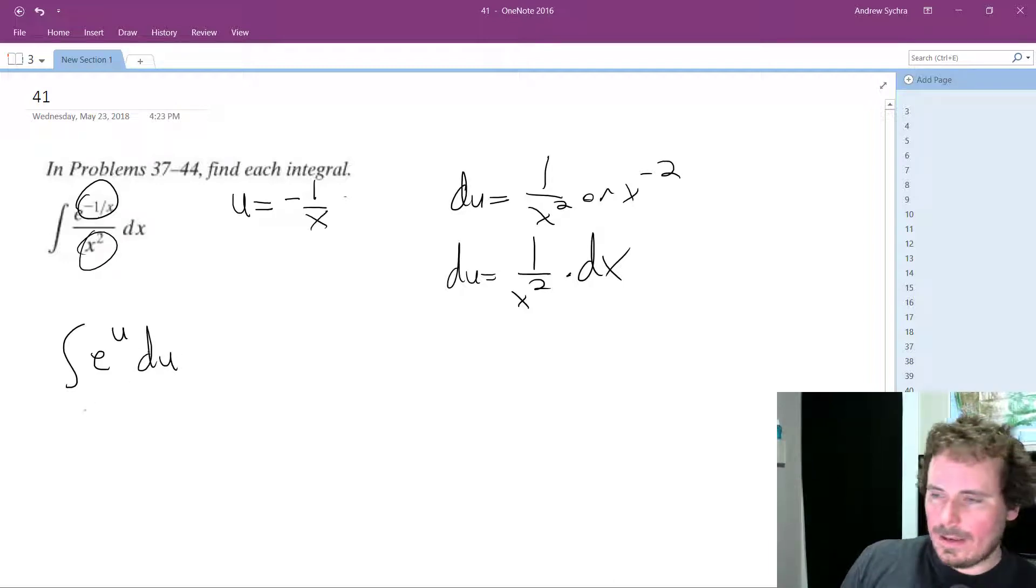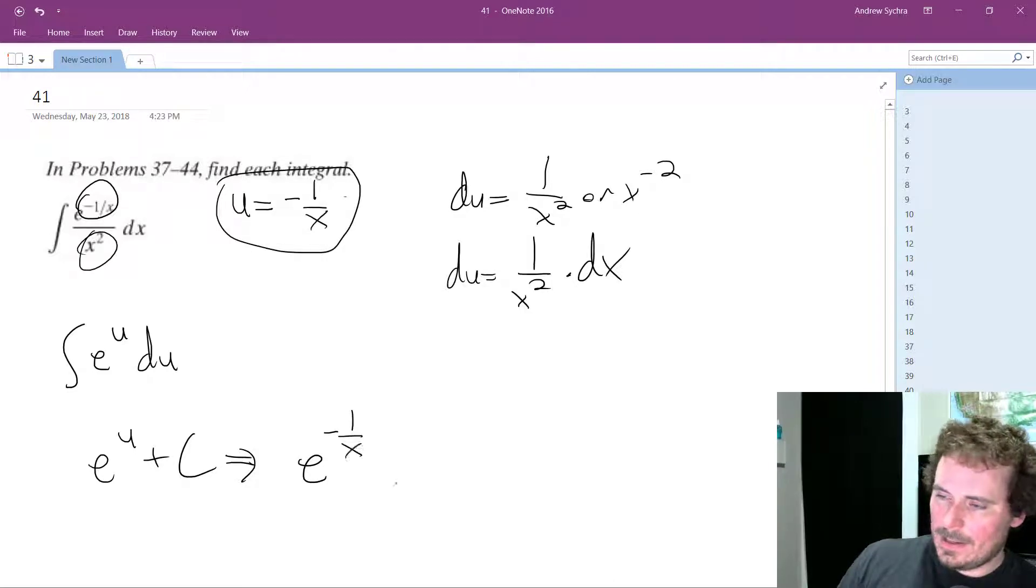So we integrate, and what we end up with is e raised to the u plus c, and we've got to sub everything back in. So this simply just becomes, we sub back in for u, we get e raised to the, or u is just negative 1 over x plus c.